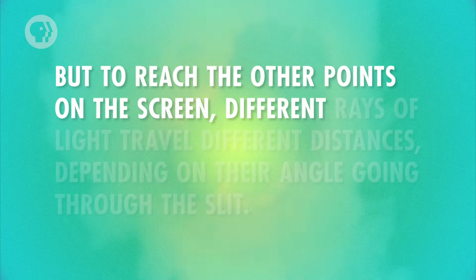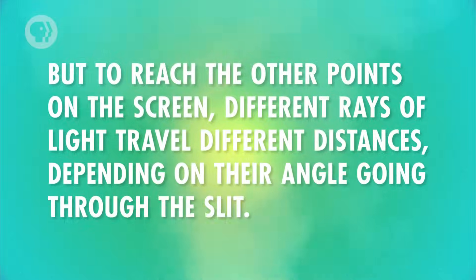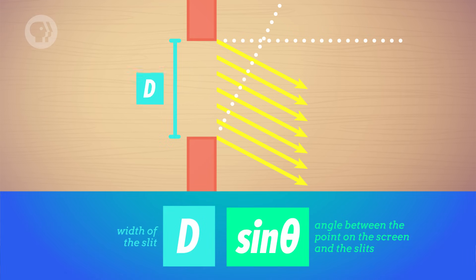But to reach the other points on the screen, different rays of light travel different distances, depending on their angle going through the slit. And again, whether the light interferes constructively or destructively depends on how the rays line up. For a single slit, the path difference is between the light coming from the very top of the slit and the light coming from the very bottom of the slit. The path difference is equal to the width of the slit, D, times the sine of the angle between the point on the screen and a line straight from the slit to the screen.